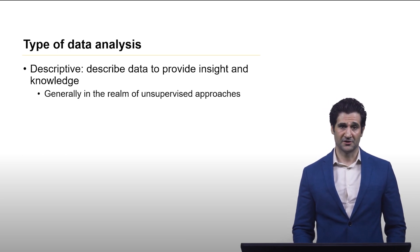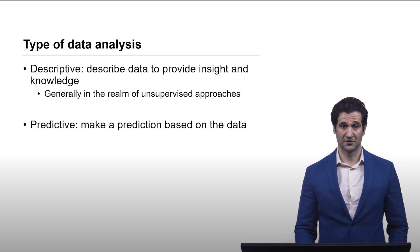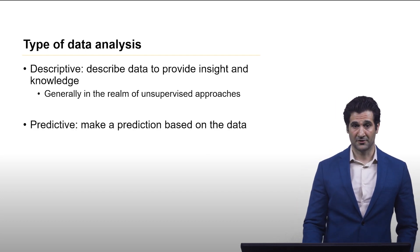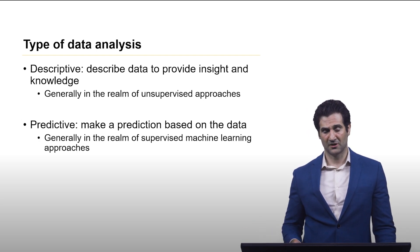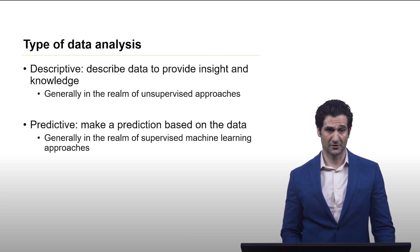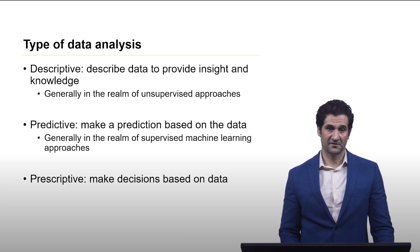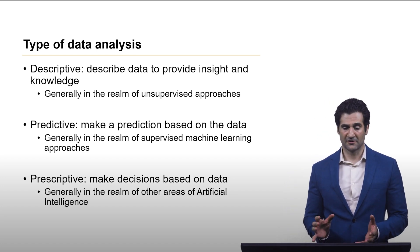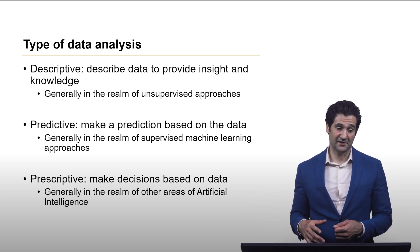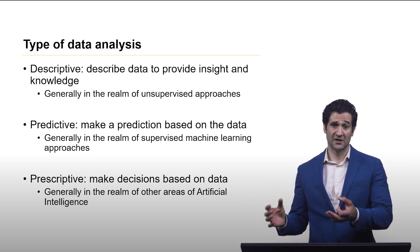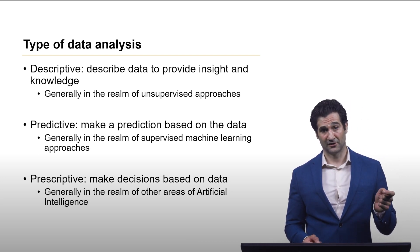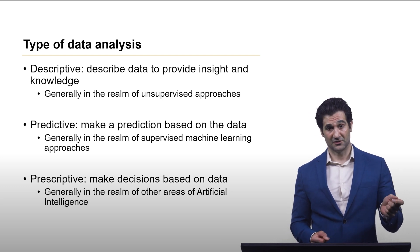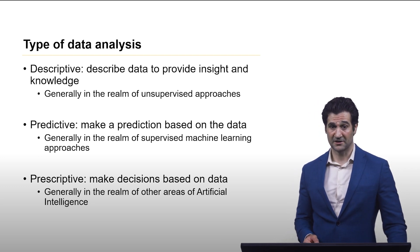Descriptive analysis generally falls in the realm of unsupervised machine learning approaches. There is predictive — making a prediction based on the data — which falls in the realm of supervised machine learning approaches. And then finally, prescriptive, which is making decisions based on the data. This tends to fall in other areas of AI, especially things like game theory and AI planning. However, there is one area of machine learning called reinforcement learning that is used to make decisions based on data, and we'll talk about this in a later lecture.